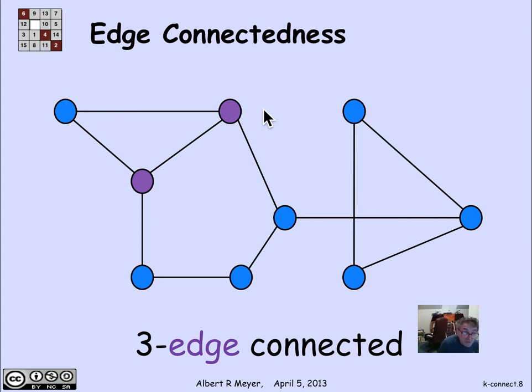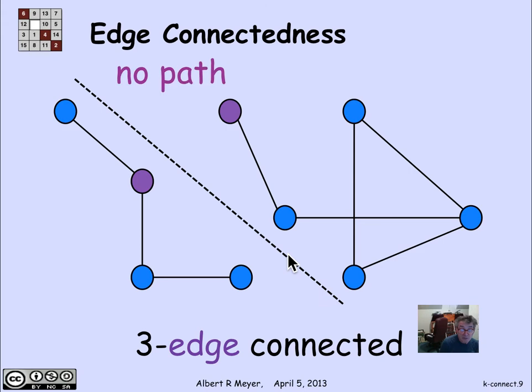If you remove three on the other hand, you can separate them. If I cut these three edges—I might have been more obvious to cut that one, but I'm doing it this way to make it interesting—if I cut these three edges, then in fact I wind up with no path between those two vertices.